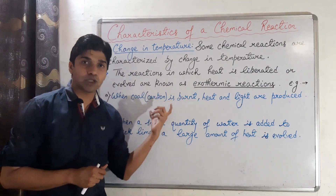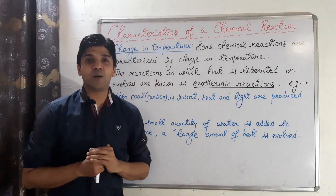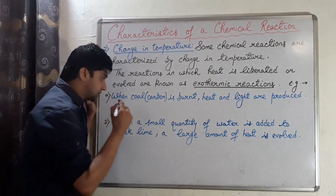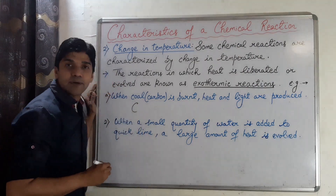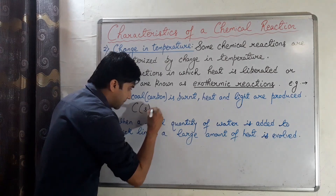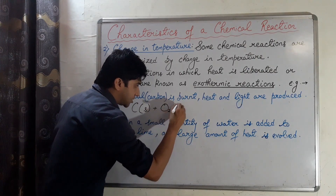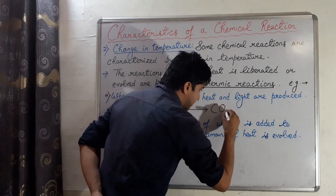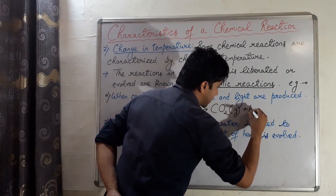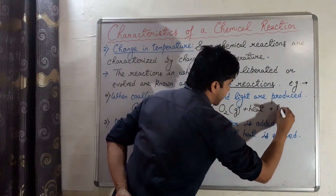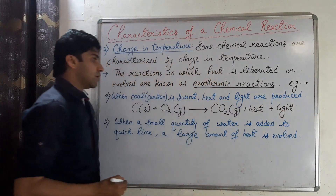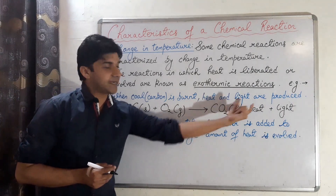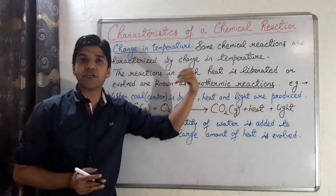Let's look at examples of exothermic reactions. When coal — the impure form of carbon — is burned, heat and light are produced. Carbon reacts with oxygen to form carbon dioxide along with heat and light energy. In this case, heat is evolved or liberated, making it an exothermic reaction.